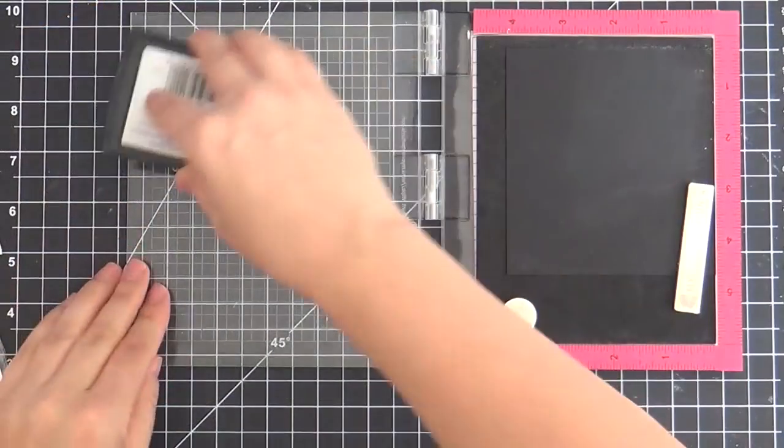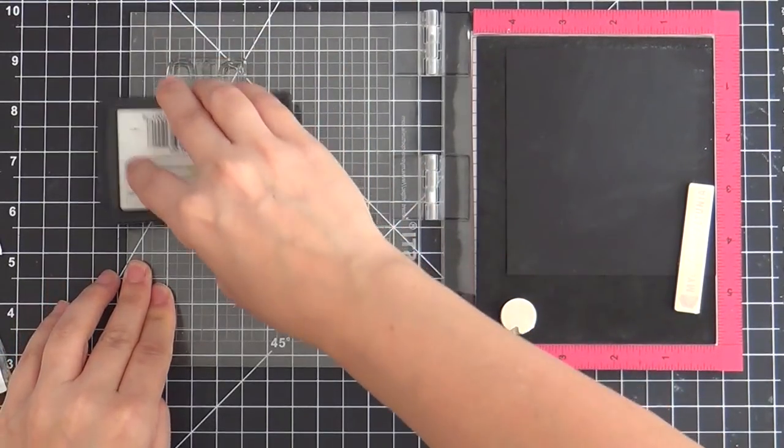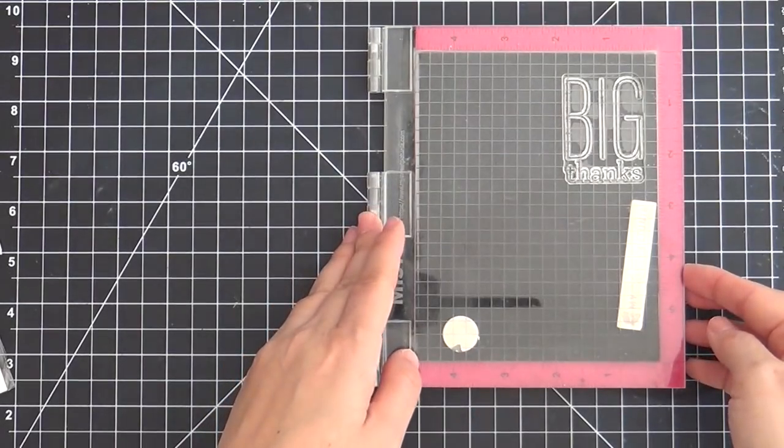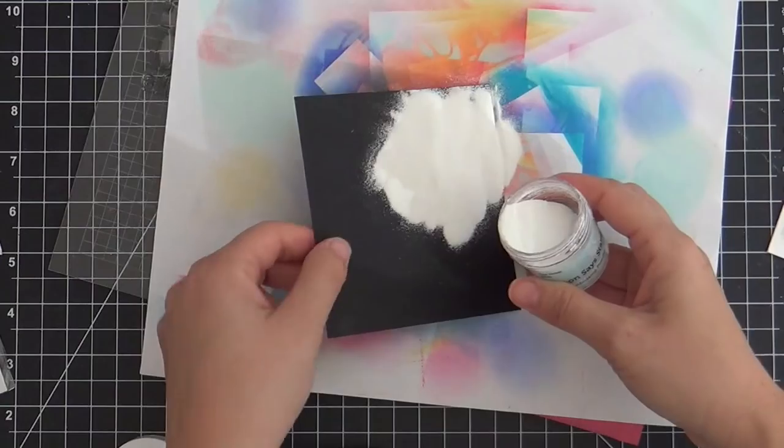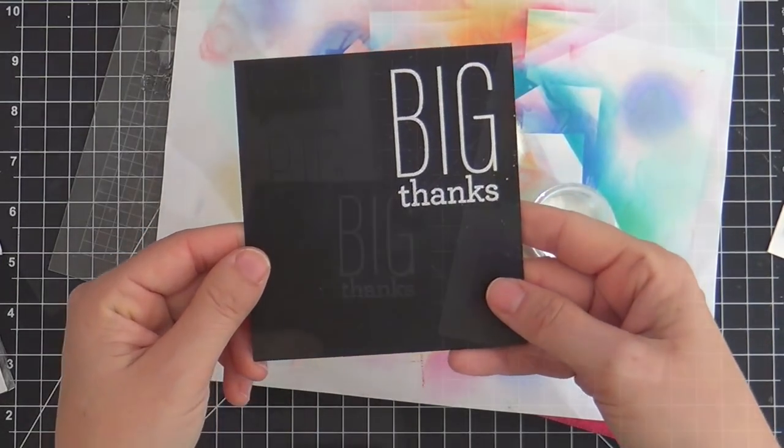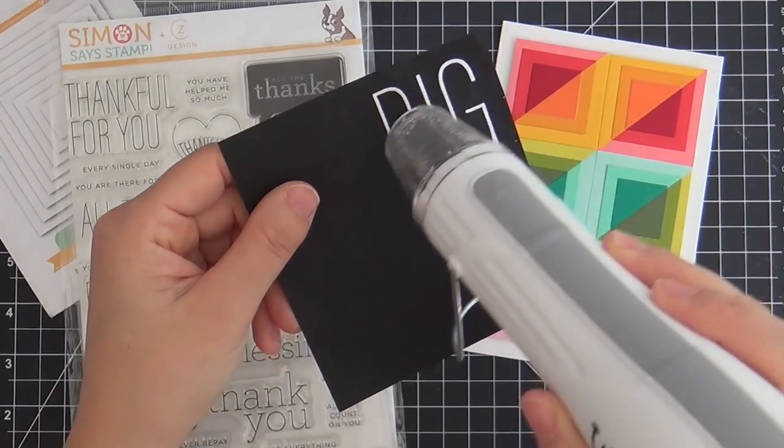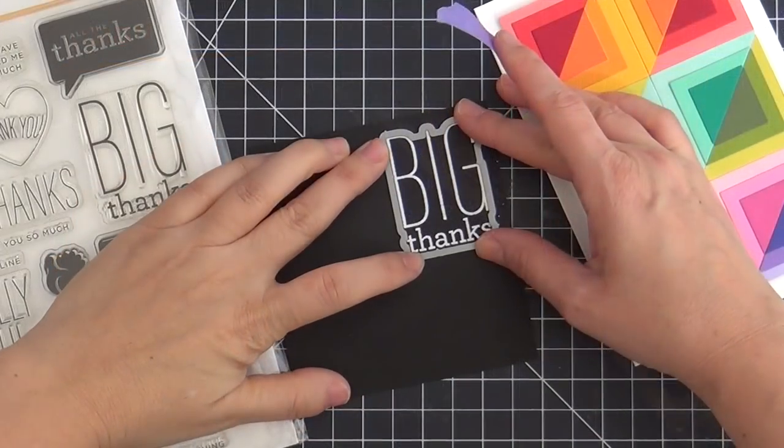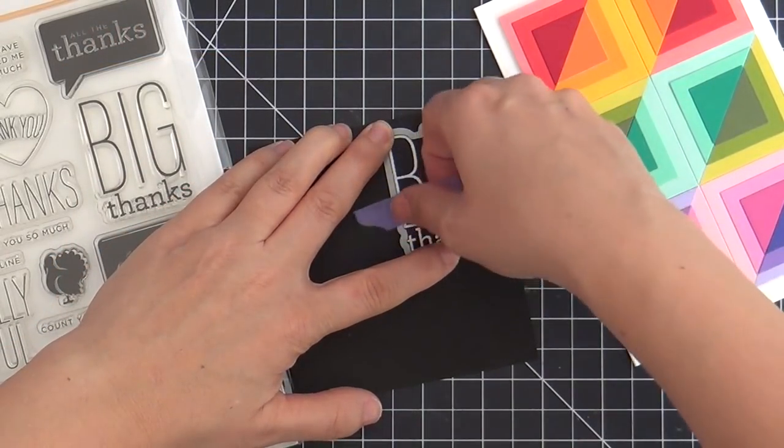But for a sentiment, I needed something tall because it's a nice big tall card. I went with this big thanks from Kathy Zielski's All the Thanks stamp set. I would have even liked to have something that was even taller, but I couldn't find it because I like a nice clean look to my sentiment. I didn't want anything scripty, I wanted it clean and graphic.